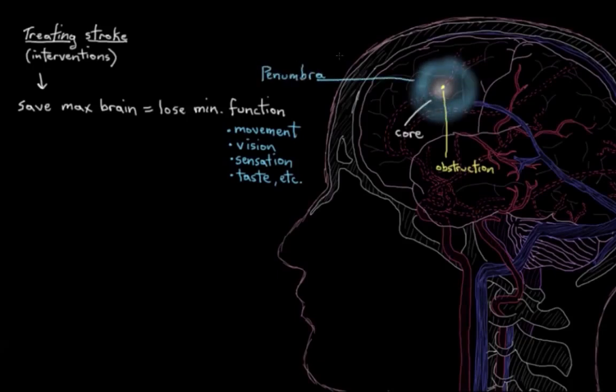but the good news is that there's salvageable brain tissue surrounding that core called the penumbra. So this is an area where blood perfusion has gone down because of the blockage here, but since it's still getting oxygen peripherally from blood vessels in the areas around it, these penumbra neurons don't die off right away.